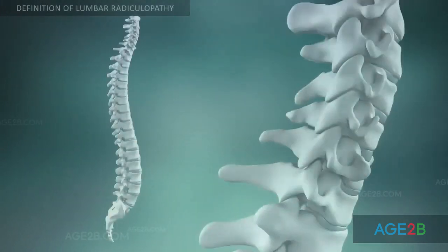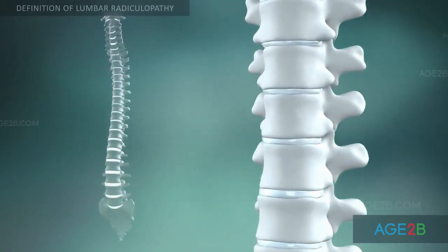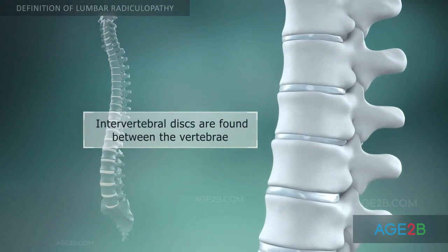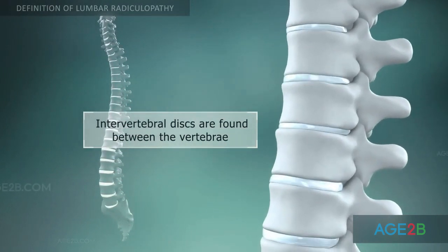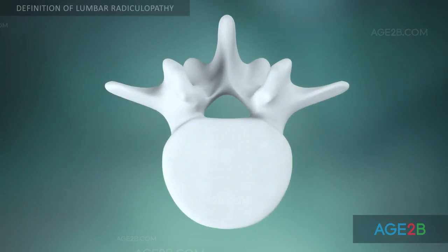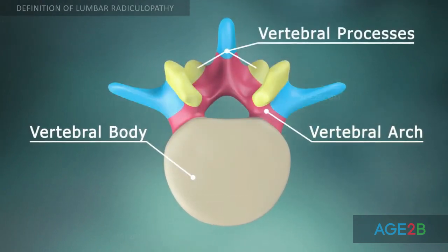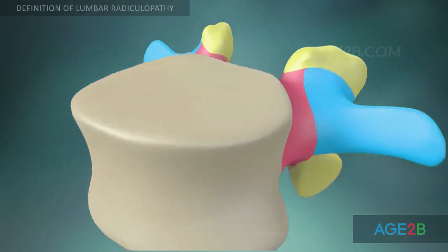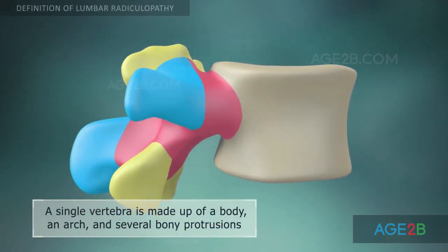The spine is made up of 33 individual bones called vertebrae, separated by intervertebral discs. A typical lumbar vertebra consists of a body and a vertebral arch, which has several processes for articular and muscular attachments.